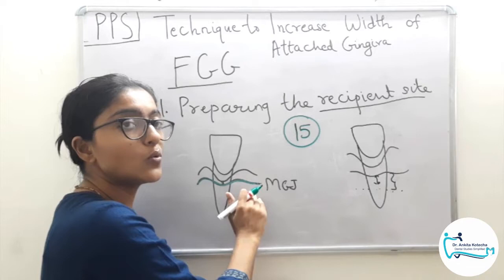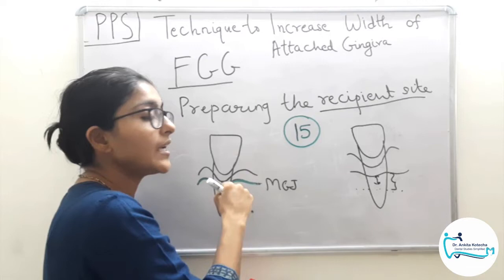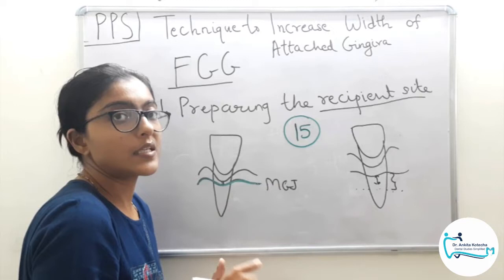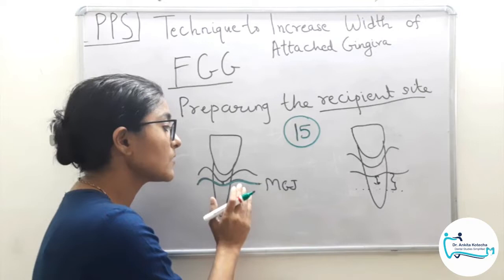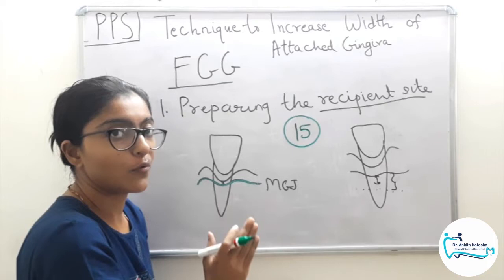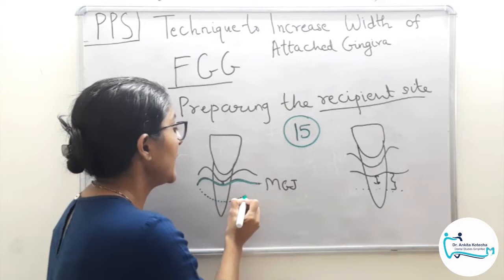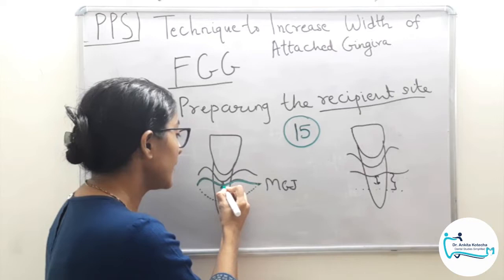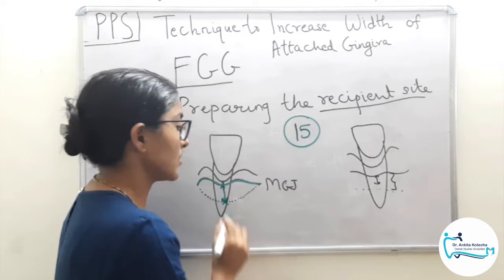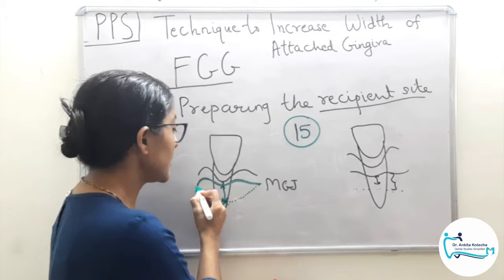Now we make the bed preparation — clearing the site of any muscle attachments. Since this is a partial-thickness incision, the periosteum is kept intact and we relieve muscle attachments to prepare the bed. The alveolar mucosal margin is then positioned apically at the level till where we want to increase the width of attached gingiva. This is how the recipient bed will look.